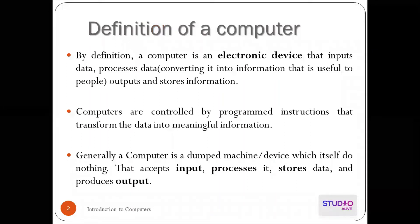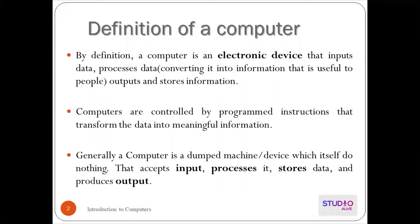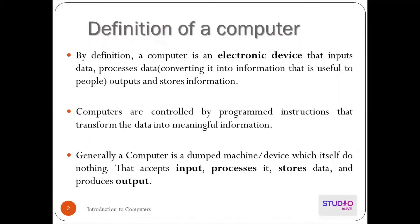By definition, a computer is an electronic device that inputs data, processes data, converting it into information that is useful to people, and outputs and stores information. Computers are controlled by programs — instructions that transform data into meaningful information. The computer follows these programs, performing tasks and converting data into information.